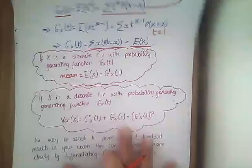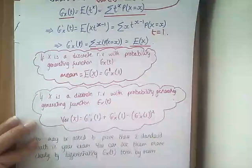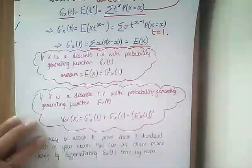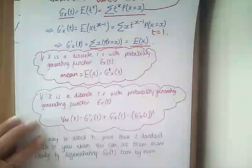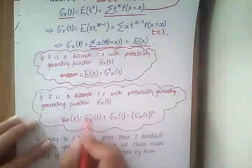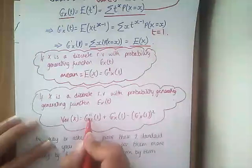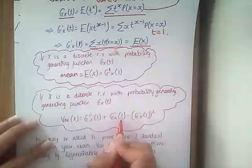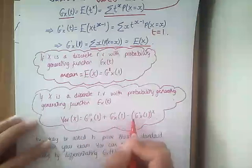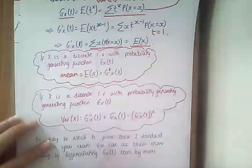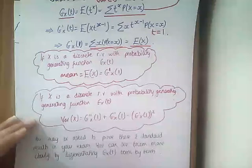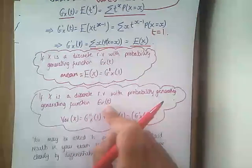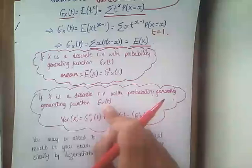In a very similar way, we have an expression for the variance of X. If X is a discrete random variable with probability generating function g_X(t), then the variance is g''_X(1) — differentiating twice and substituting in t=1 — plus g'_X(1), which is the mean, minus [g'_X(1)]² which is the mean squared.